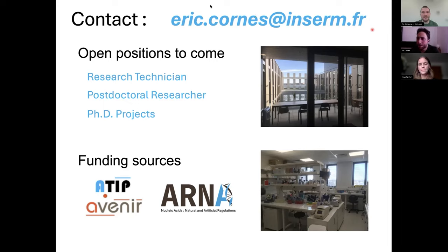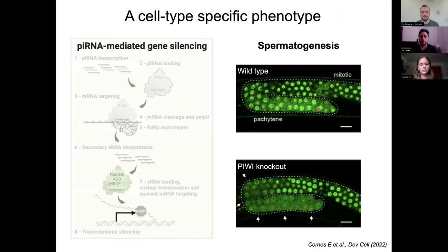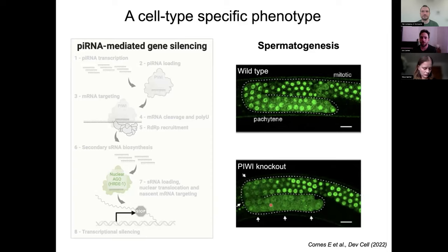Question from the audience: Do you know whether the piRNA pathway plays an analogous role during oogenesis? That's a good question. We didn't see anything similar to what I showed during spermatogenesis. There is no direct transcriptional regulation during oogenesis. The localization of the nuclear Argonaute in wild-type germlines and piRNA mutants is identical — we don't see any change. And in the transcriptional genome-wide datasets, we don't really see any huge signature of upregulation or downregulation related to oogenic genes. So it's really sperm-specific.